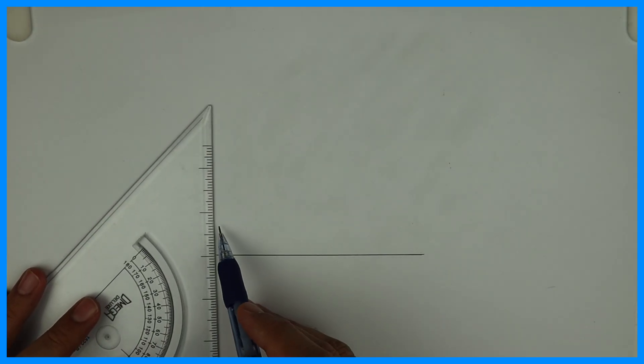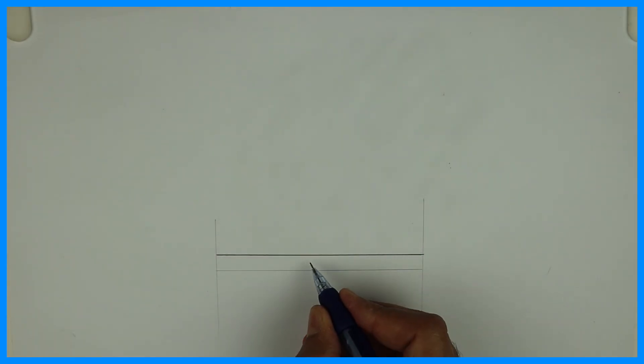So first we will draw a square of side 120. The side you can take anything. I'm taking 120. You can take according to your question.